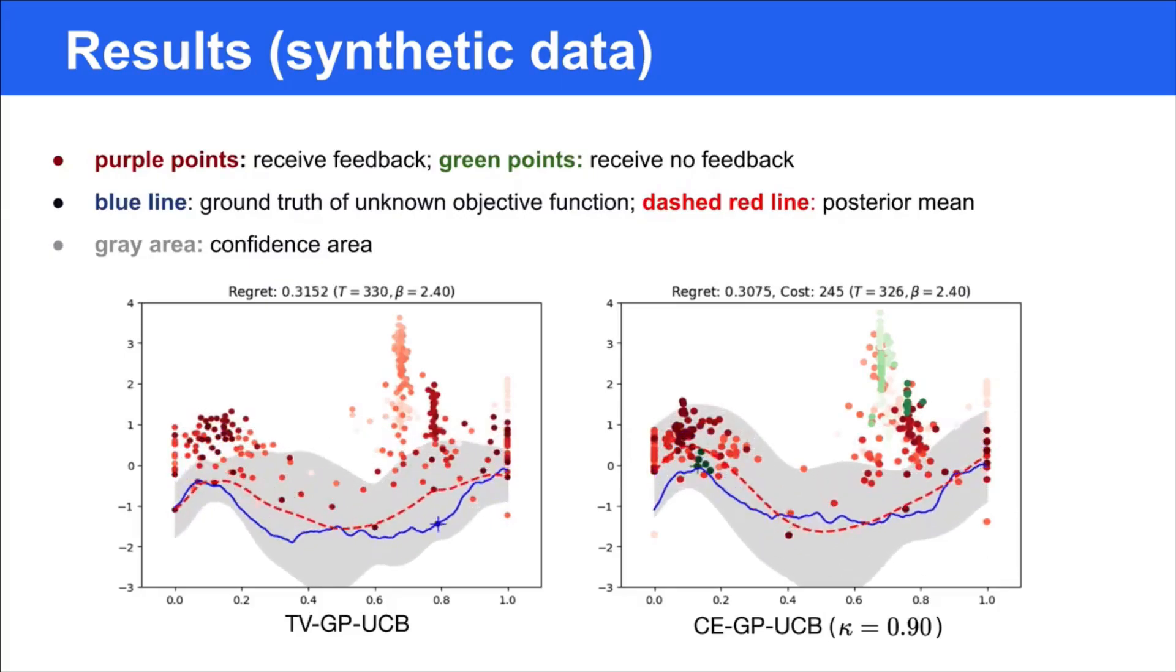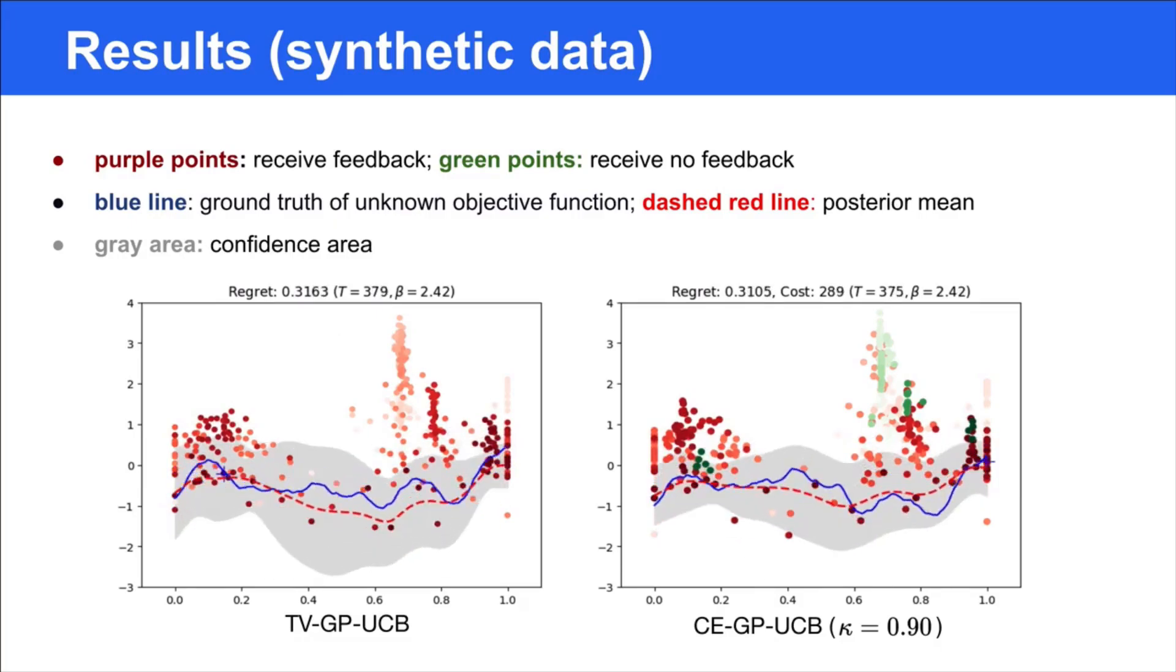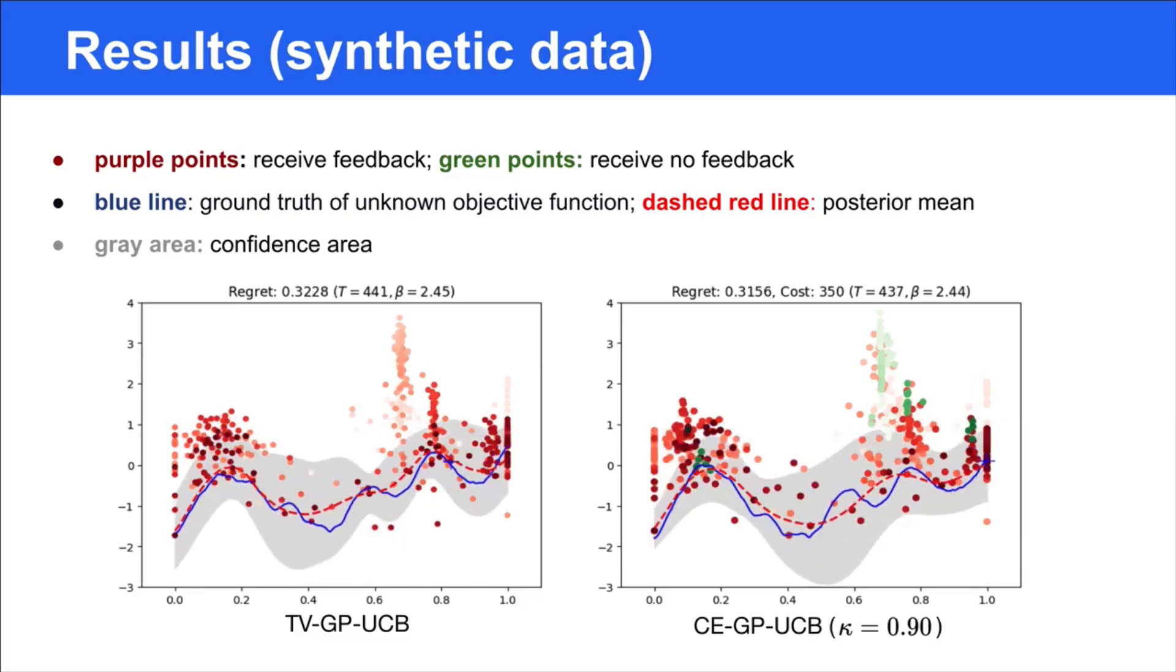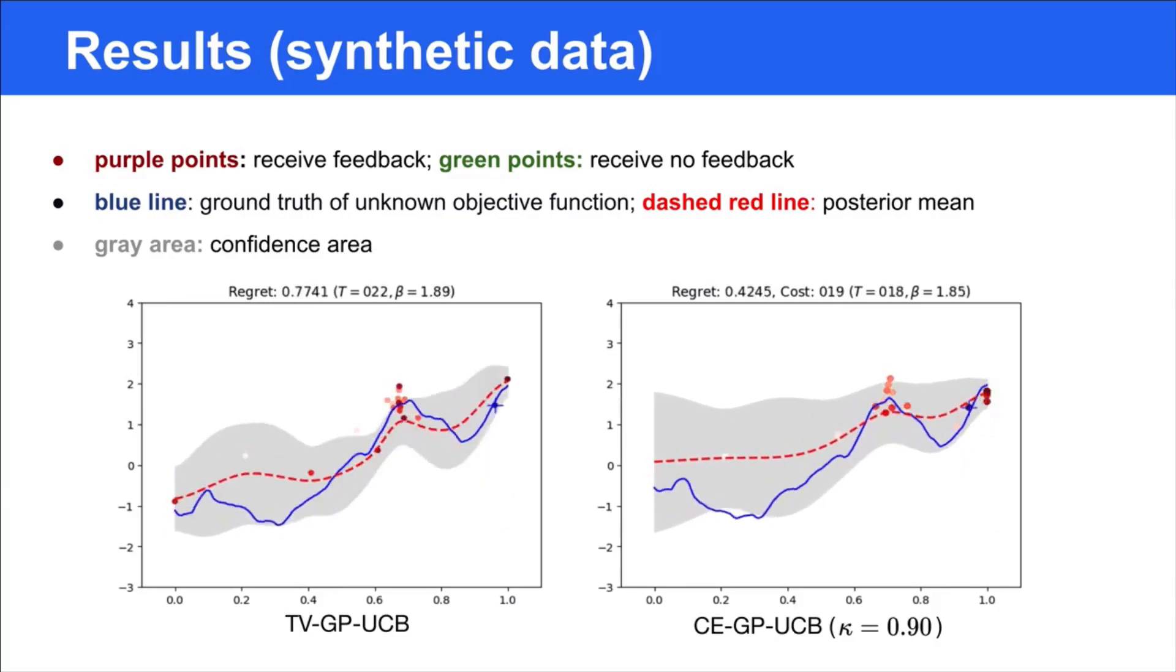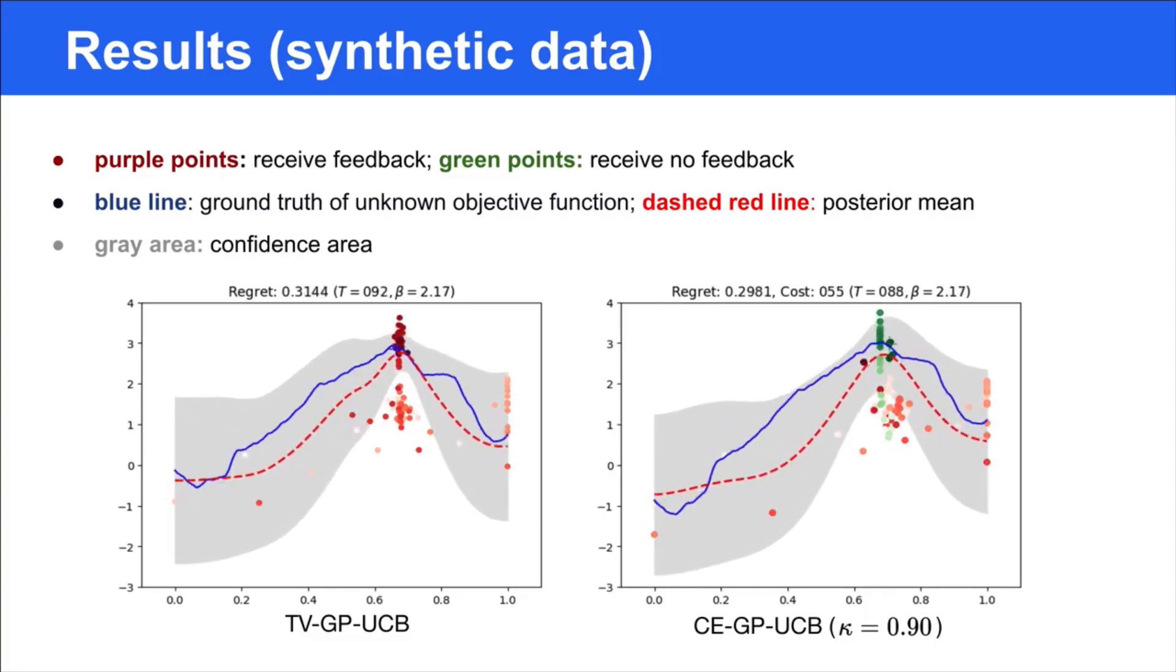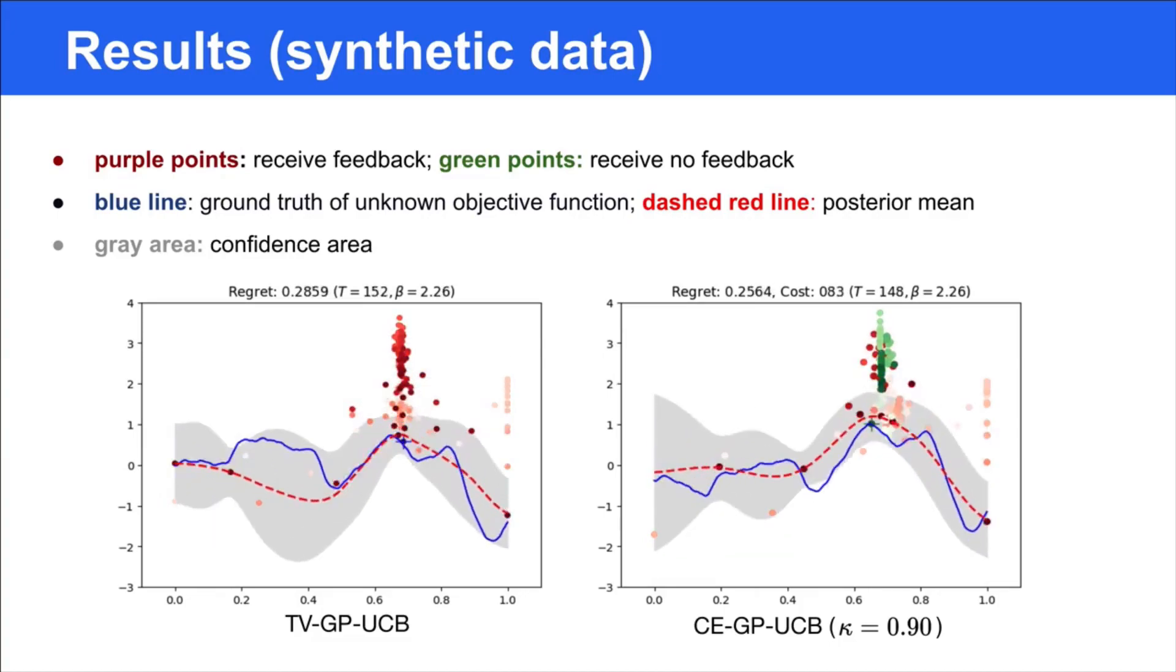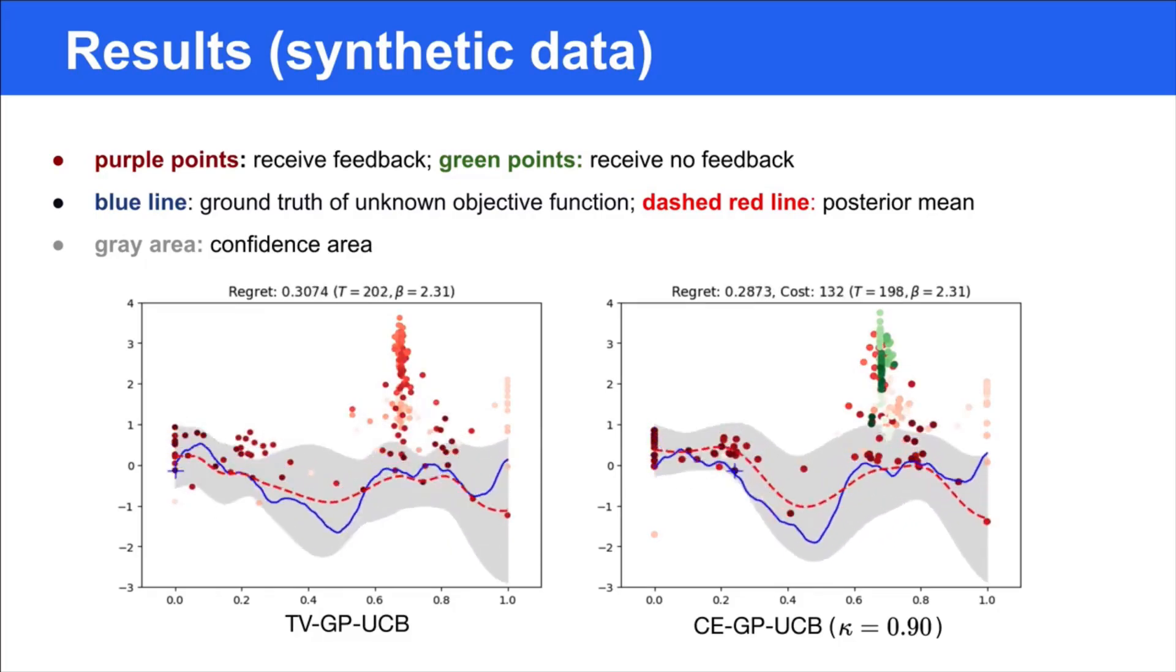For a better understanding of how the proposed cost-efficient query rule works, we visualize the GP models for the time-varying GP-UCB with full observations and our cost-effective GP-UCB. Here, the purple points denote the GP model receives the feedback, and the green points denote the GP model skipping the query. The blue line is the ground truth objective, and the dashed red line is the posterior mean. The gray area denotes the confidence area. From the video, we know the proposed method is able to save queries significantly while maintaining similar performance. Moreover, the CE-GP-UCB only skips the query when the candidates are close to the optimal point, thus leading to minor regret.